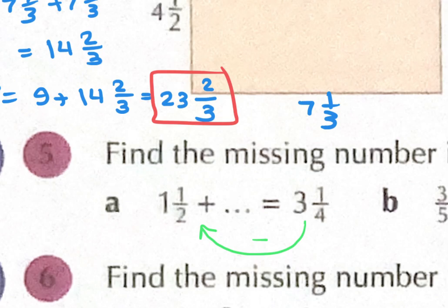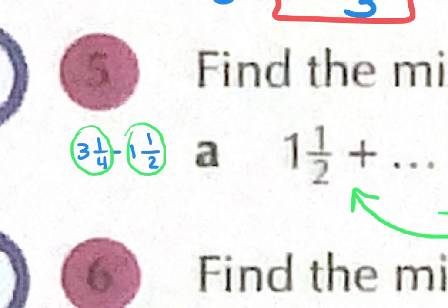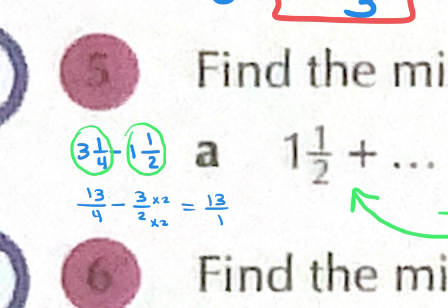Now solve 5A on your own. To find the missing side, subtract: 3 and 1 over 4 minus 1 and 1 over 2. Convert to improper fractions: 3 times 4 plus 1 gives 13 over 4. Minus 1 and 1 over 2 equals 3 over 2; multiply by 2 to get 6 over 4. So 13 over 4 minus 6 over 4 equals 7 over 4, or as a mixed number, 1 and 3 over 4.